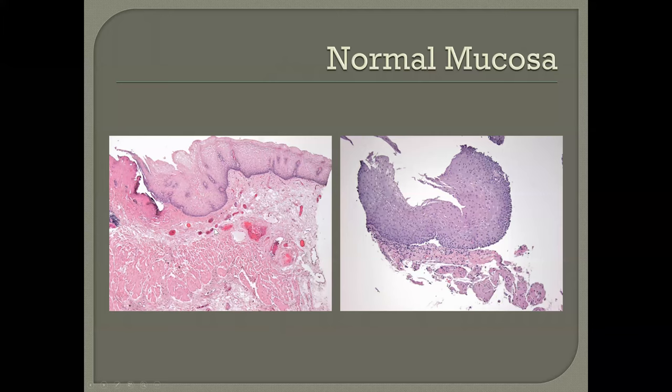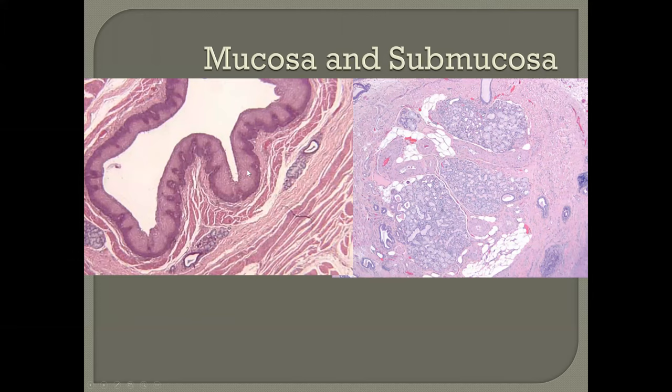There is a submucosa and a muscularis mucosa that define a lamina propria. There may be occasional reedy papillae extending up into the squamous epithelium to provide nutrients. The thickness of the muscularis mucosa can be variable. In addition, there may be small ducts, usually lined by squamous mucosa, leading to submucosal glands.